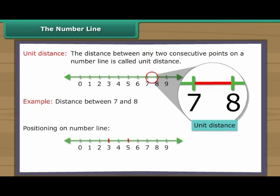Out of two whole numbers, the greater number comes on the right of the other number on the number line.